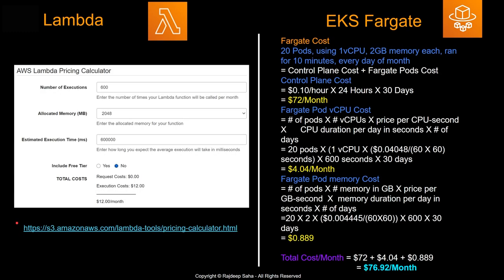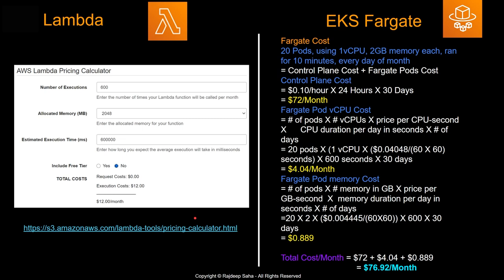On cost: using the AWS Lambda pricing calculator, with 600 executions per month, 2GB of allocated memory, and an estimated execution time of 10 minutes, the total cost comes to around $12 per month. For the same configuration on EKS Fargate — 20 pods using 1 vCPU and 2GB of memory each, running 10 minutes every day of the month — the cost comes to around $77 per month. But this will change based on volume, so don't assume Lambda will always be cheaper.